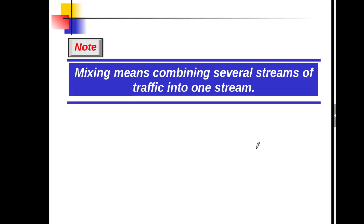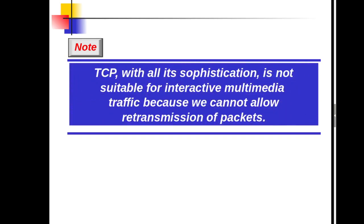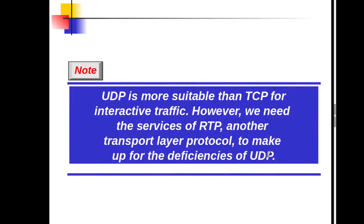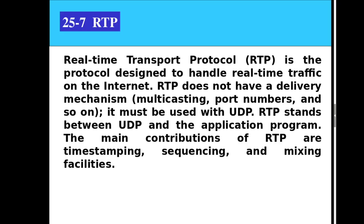For transport layer support, TCP with all its sophistication is not suitable for interactive multimedia traffic because retransmission of packets is not allowed. UDP is more suitable since it supports multicasting and has no retransmission strategy. However, UDP has no provision for timestamping, sequencing, or mixing. A new transport protocol — Real-Time Transport Protocol (RTP) — provides these missing features. RTP will be covered in the next video.